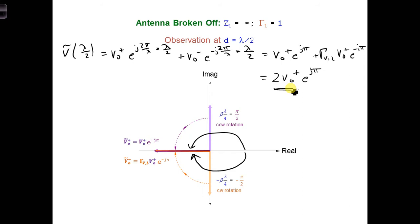More generally, the amplitude of the voltage maxima, even if it doesn't occur at the load as it does here, always occurs whenever the 2 voltage phasors, v naught plus and v naught minus, are parallel when they're adding. So in that case,